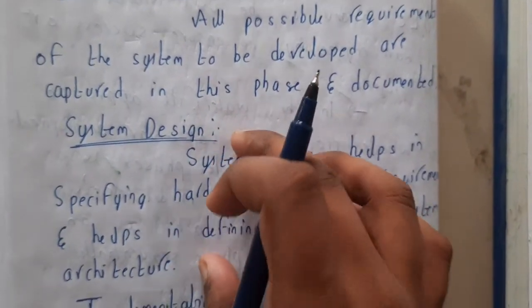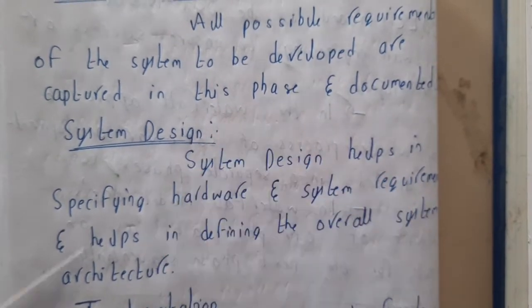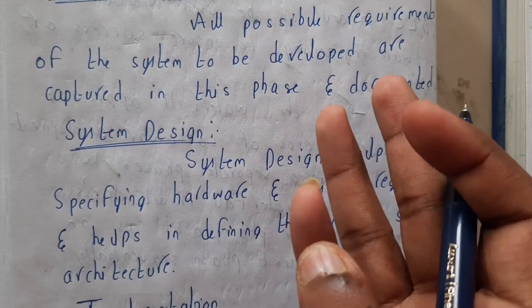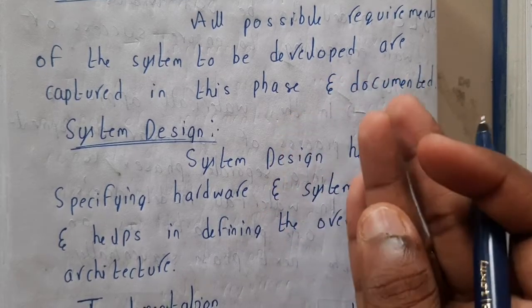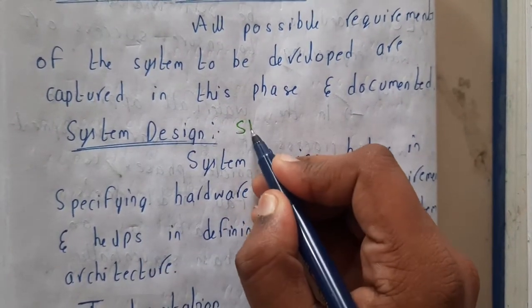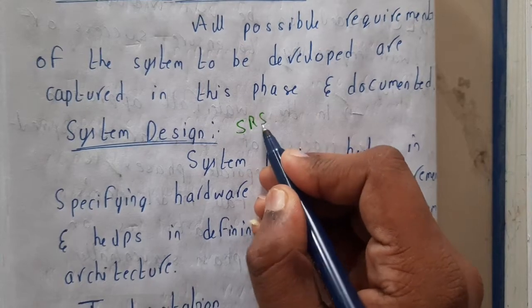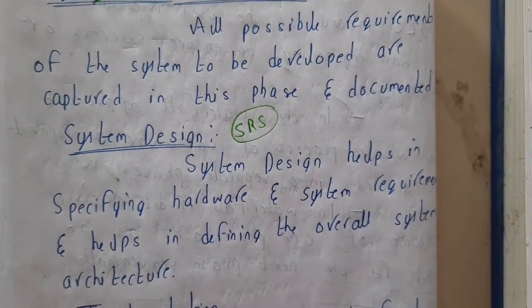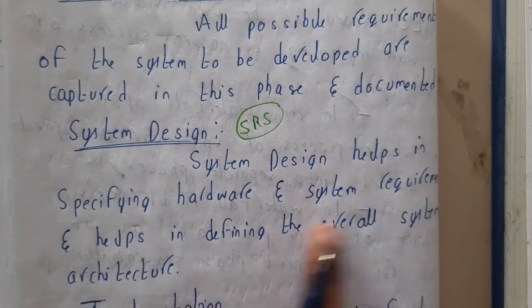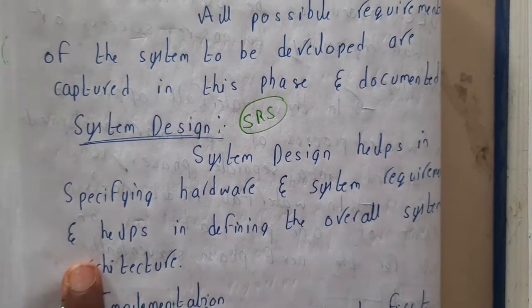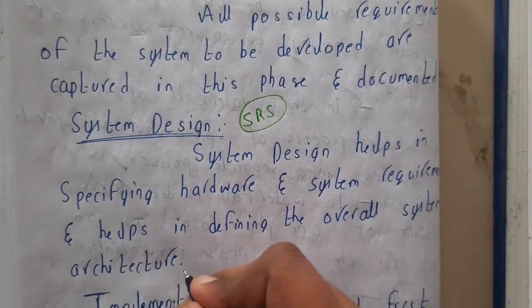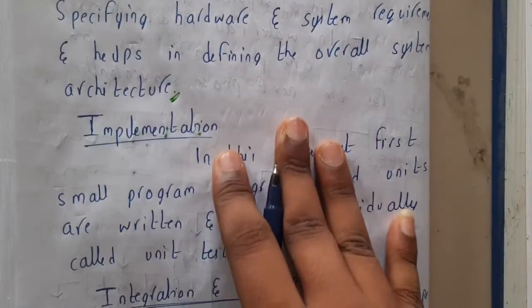The next step is system design, where hardware requirements, system requirements, and the overall system architecture are analyzed. The output is a document called SRS (Software Requirements Specification), and system design helps in identifying the overall system architecture.